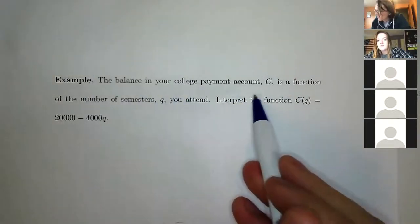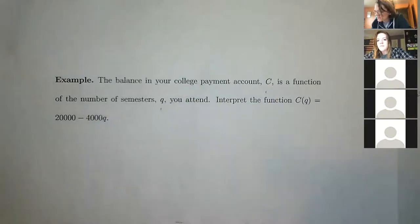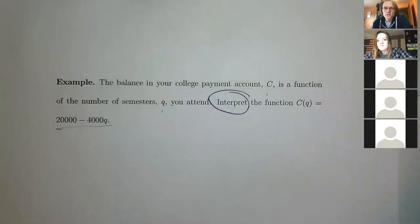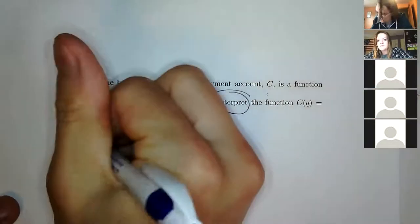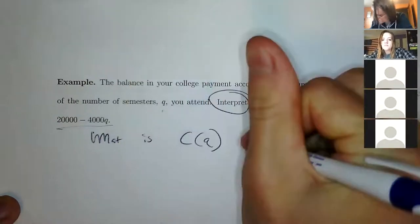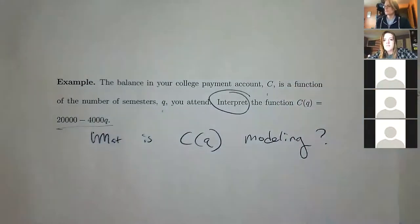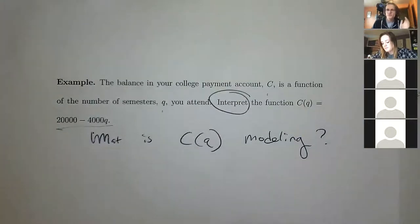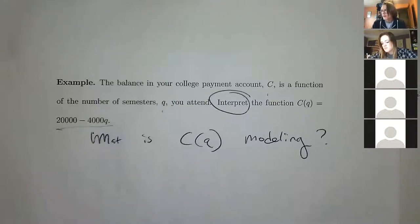So the balance in your college payment account C is a function of the number of semesters Q you attend. Interpret the function C(Q) = 20,000 - 4,000Q. There's not really any strict math work to do here — it just says interpret. You want to try to understand what this function is modeling. So what is C(Q) modeling? Modeling is a word we're going to talk about more and more.